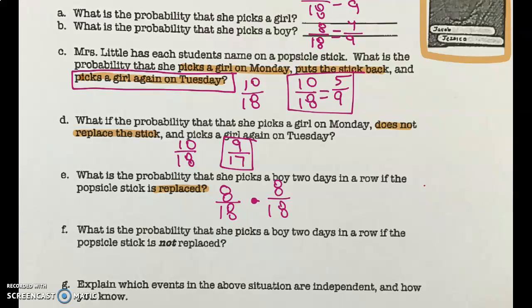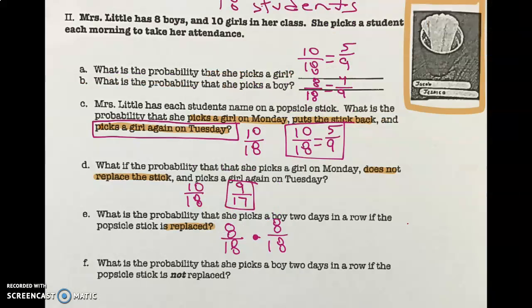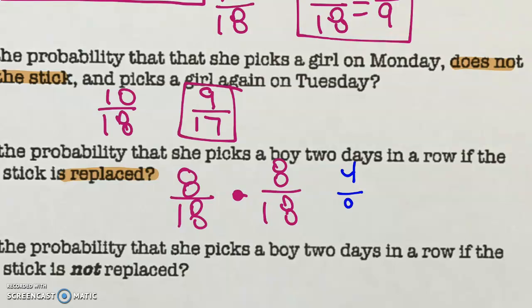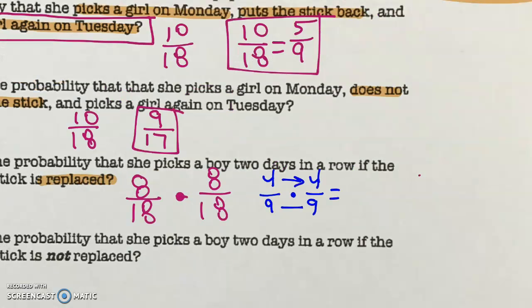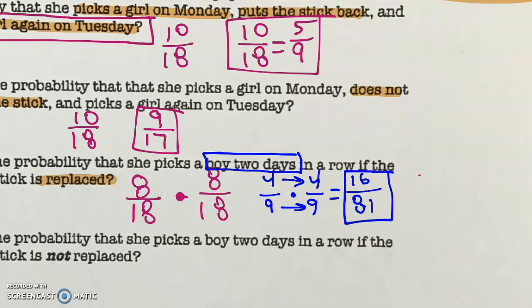We can simplify the fractions and then multiply. We simplified eight out of 18 to four-ninths, so that's just four-ninths times four-ninths. We cannot cross-simplify that, so we multiply straight across — because remember, it's two days in a row. Four times four is 16, nine times nine is 81. So the probability is 16 out of 81.